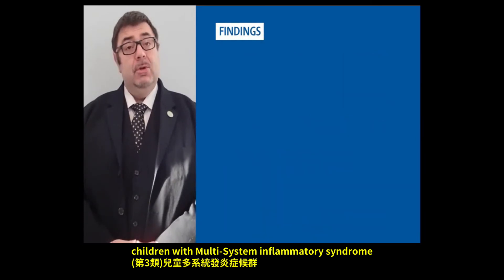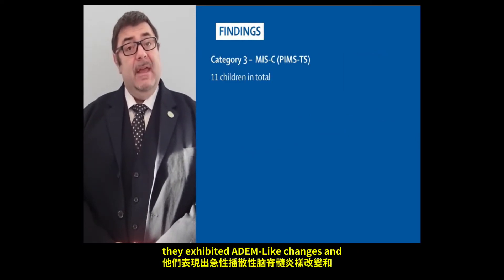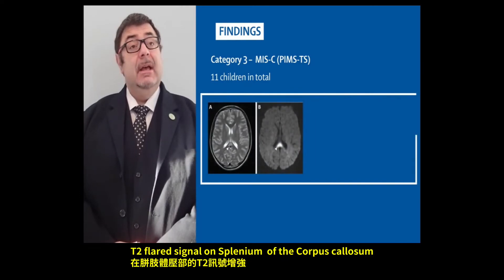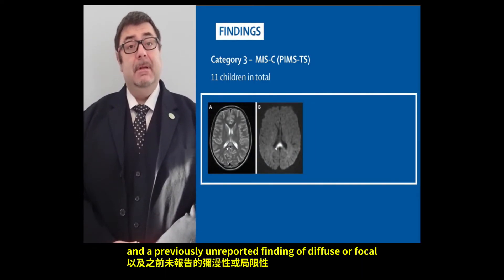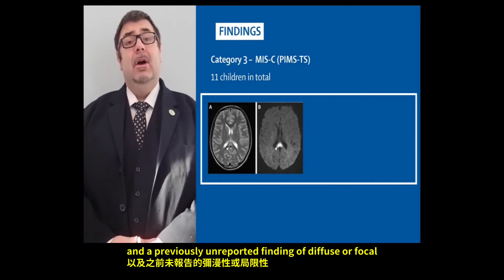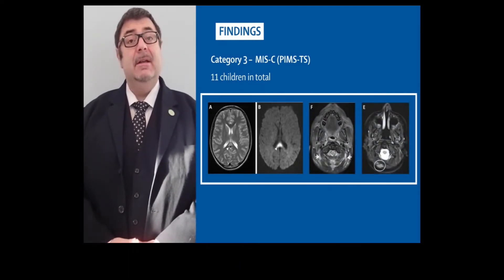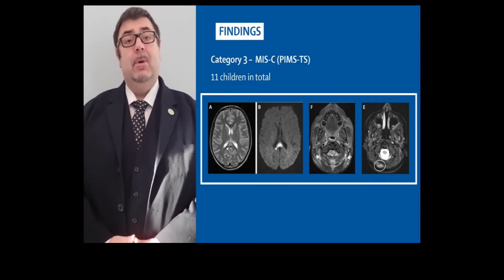Children with multisystem inflammatory syndrome exhibited ADEM-like changes and high T2 FLAIR signal lesions in the splenium of their corpus callosum, and a previously unreported finding of diffuse or focal myositis. All of these children did well.